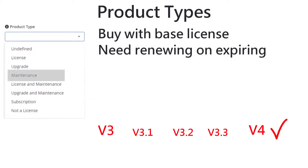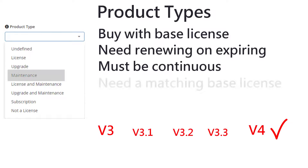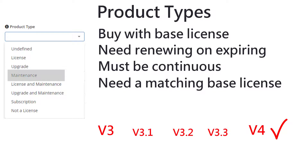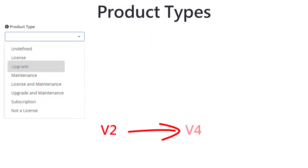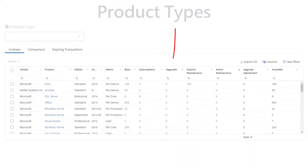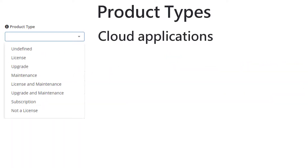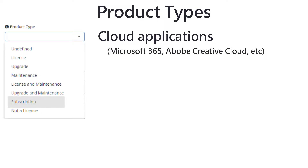License and maintenance adds one to a maintenance column and to the base column. Typically, you need to make sure there is no gap in your maintenance agreements or the maintenance becomes invalid. You also need to ensure that there is a base license for each maintenance license. If your maintenance has expired or you never had maintenance and you want to upgrade to a newer version, then you need an upgrade license — or upgrade and maintenance if you want to avoid buying upgrades in future. Upgrade adds one to the upgrades column. If you have signed up to a subscription to a cloud application such as Microsoft 365 or Adobe Creative Cloud, you choose subscription, which adds one to the subscriptions column.